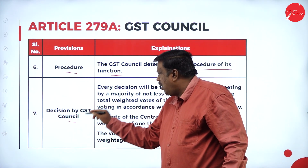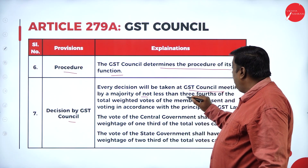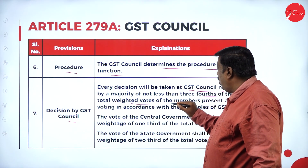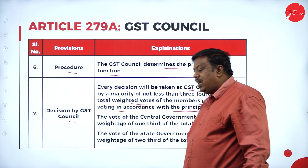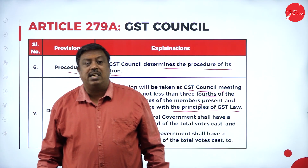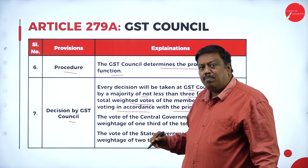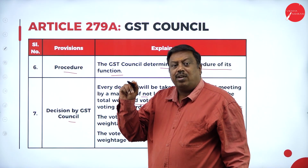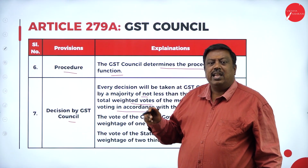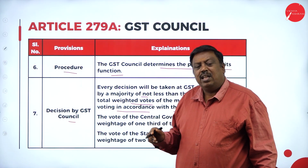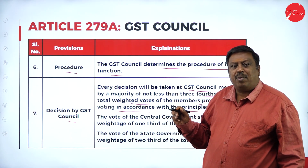Every decision of the GST Council will be taken by a majority of not less than three-fourths of the total weighted votes of the members present and voting. This means that for a major decision, out of 10 members, at least 7 should be present for the meeting to achieve quorum and pass a resolution; if less than that, no decisions can be taken.